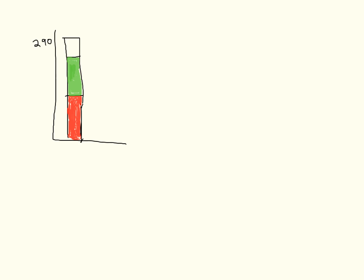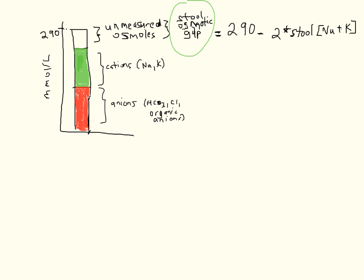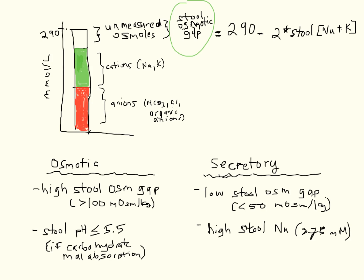The resulting acidic stools can be very irritating to perianal skin, causing a diaper dermatitis. Labs calculating the stool osmotic gap can help separate the two mechanisms. Because sodium and potassium are the main cations in stool and stool is electroneutral, doubling the sum of their concentrations gives an approximation of all the ions in the stool. This value is then subtracted from the stool osmolarity, which should equal the serum osmolarity of 290. The result is the stool osmotic gap, which estimates the amount of unmeasured osmols in the stool. In osmotic diarrhea, the stool osmotic gap is very high and the pH is often less than or equal to 5.5 in cases of carbohydrate malabsorption. Meanwhile, secretory diarrhea usually has a low stool osmotic gap and often a high stool sodium.